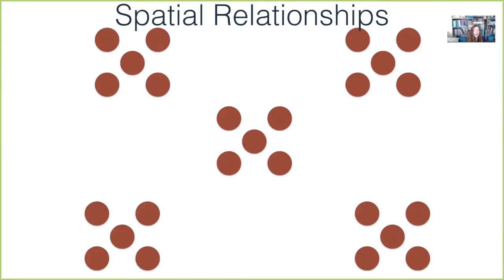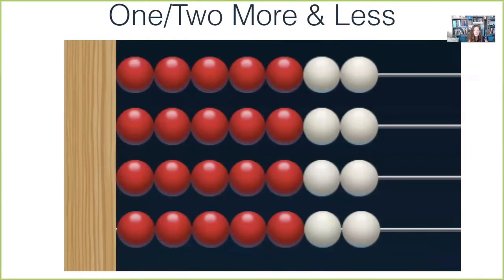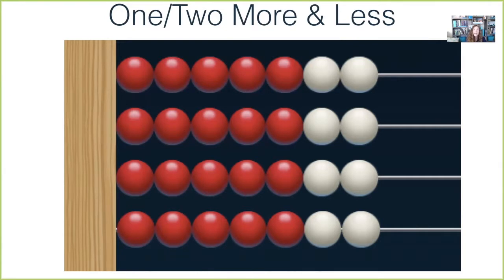I also really love using the Rekenrek for this, and it can really help bring out the idea of one and two more or less. Because when it comes to multiplication, it's not just one more and two more — it becomes one group more or one group less. When you're doing times seven, sevens are not friendly, but fives are. So if you can visualize four groups of five and then two more in there, that helps kids better understand the relationships and get more fluent with their facts if they have these relationships built.